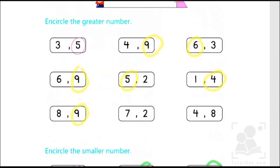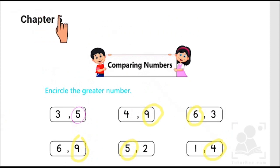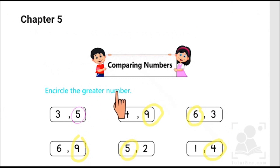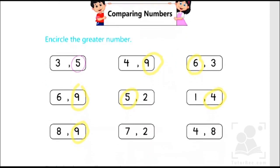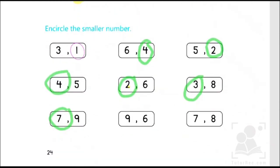Let's have a quick recap of today's activity. In today's chapter number 5, we tried to compare numbers by identifying them as either greater or smaller ones. The numbers that come later in the counting are the greater ones, and the numbers that come earlier than the other digit are the smaller ones.